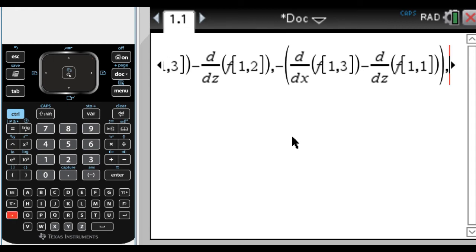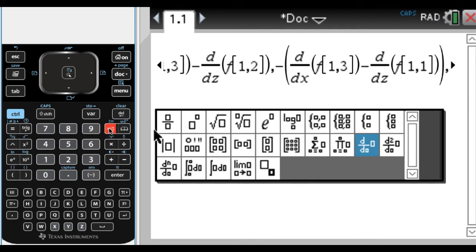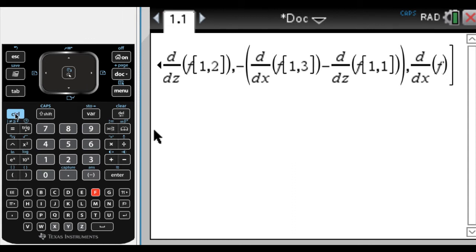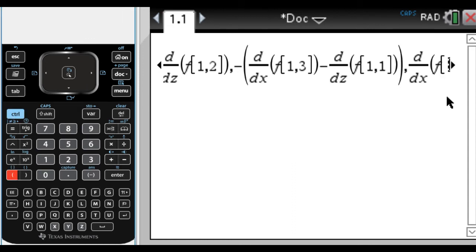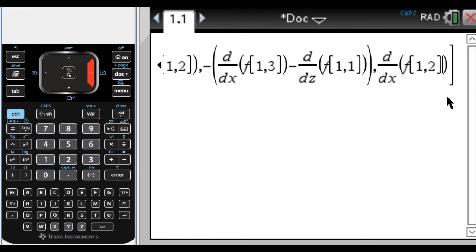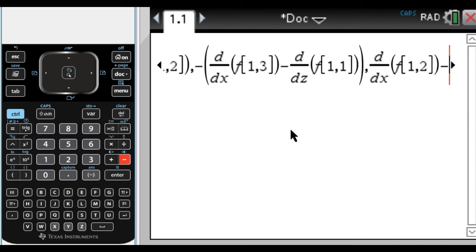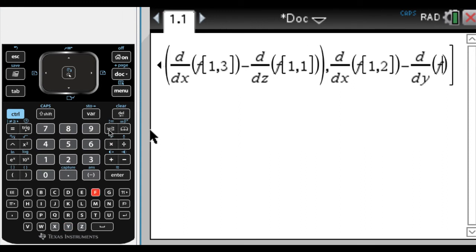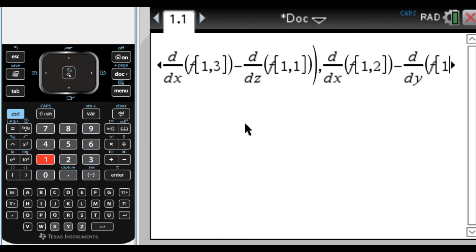And now we want the k part. So it's the derivative with respect to x of f, and the thing, so it looks like you're starting a vector again, that's in row one, column two, and then minus, so I got to get out of this parentheses, minus the derivative. So you might need to slow this video down to follow along, but that's okay. F, and then the thing that is in row one, column one.